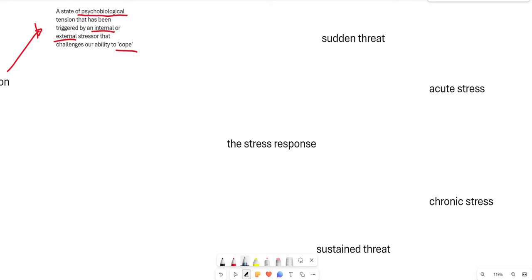So when differentiating whether it's acute stress or chronic stress, we look at the nature of the stress response. If it's to a sudden threat, then that is an acute form of stress. If it's to a more sustained threat that we simply can't resolve rapidly, then that's going to be classified as chronic stress.